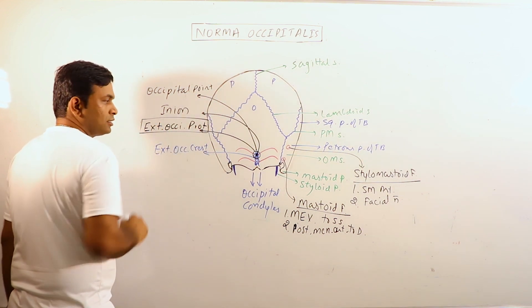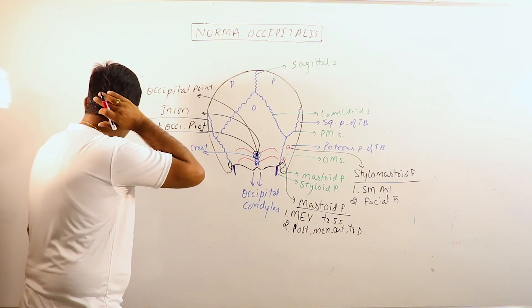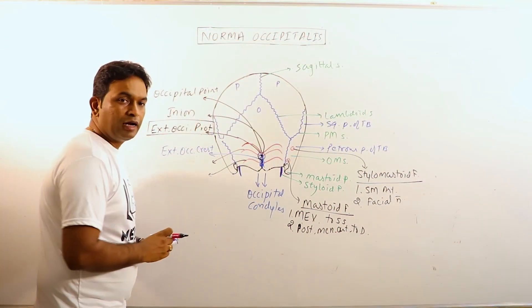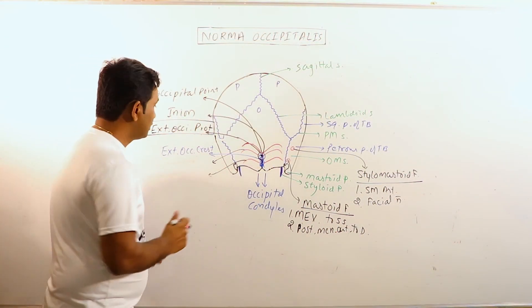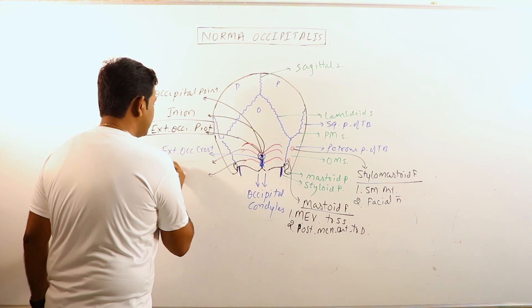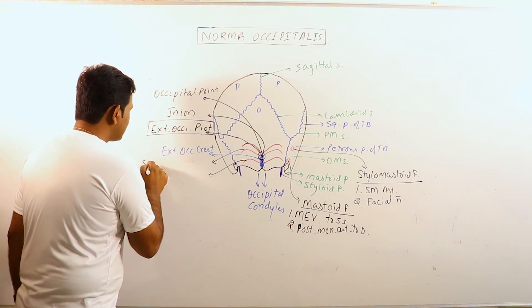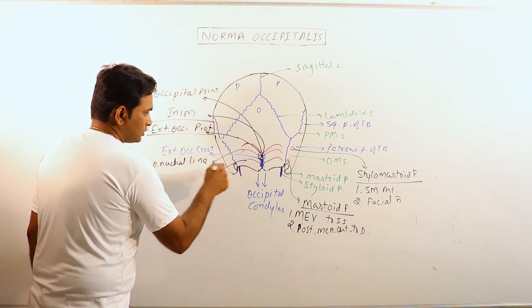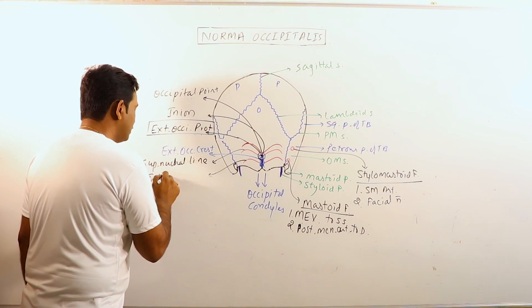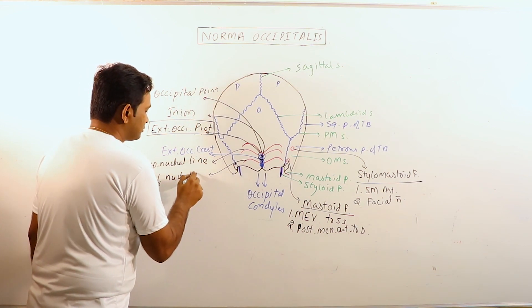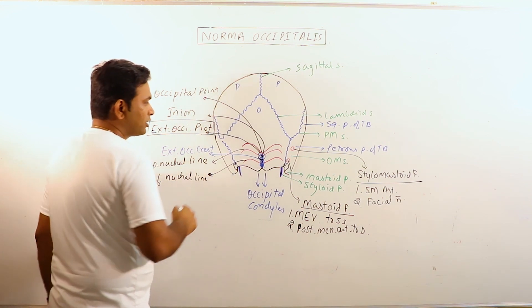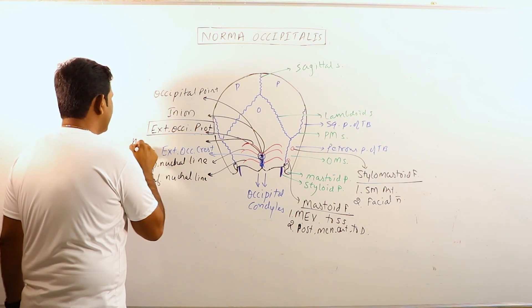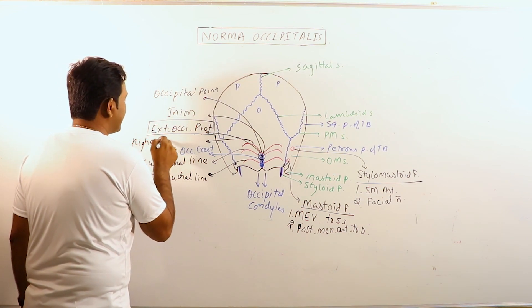External occipital protuberance indicates the junction of neck and head. In the lateral part of external occipital protuberance, we can observe a curved bony ridge. This is known as superior nuchal line. And this is another bony ridge, inferior nuchal line. Not in all individuals but there is another nuchal line which can be observed, that is highest nuchal line.